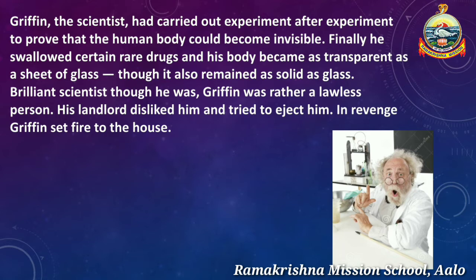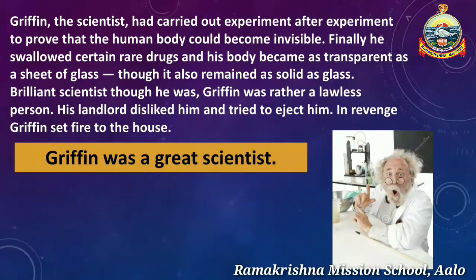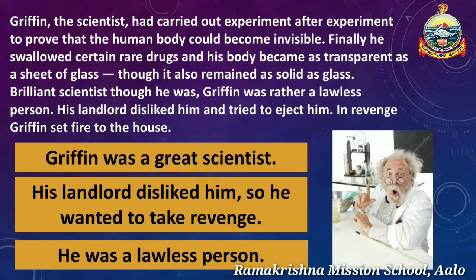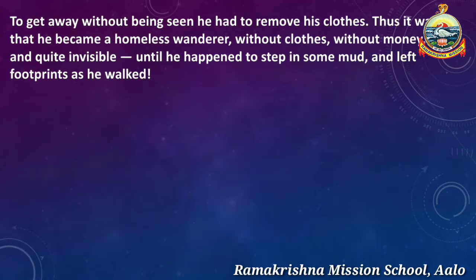Brilliant scientist though he was, Griffin was rather a lawless person. His landlord disliked him and tried to eject him. In revenge, Griffin set fire to the house. To get away without being seen, he had to remove his clothes. Thus it was that he became a homeless wanderer without clothes, without money, and quite invisible — until he happened to step in some mud and left footprints as he walked.